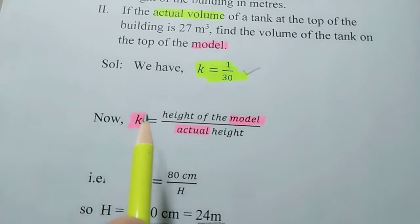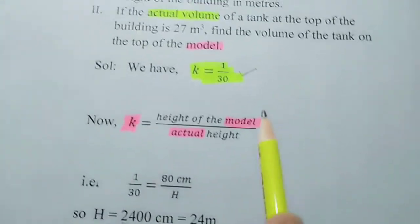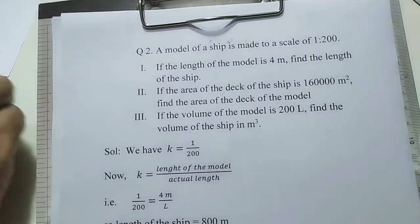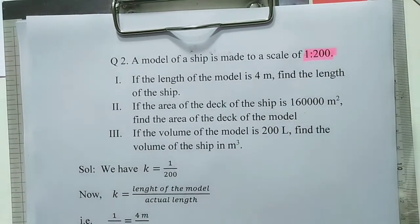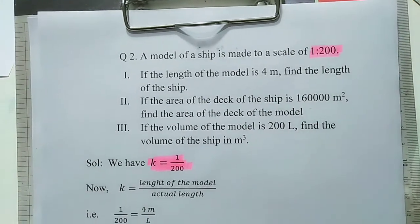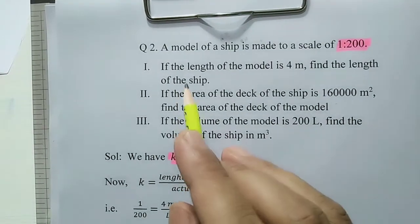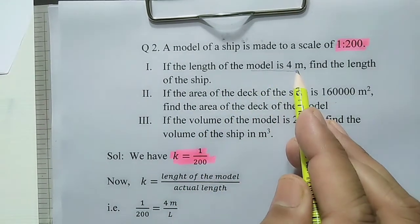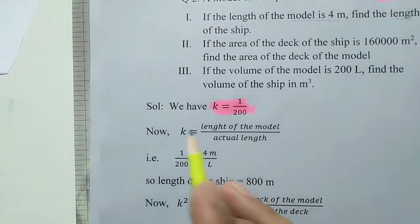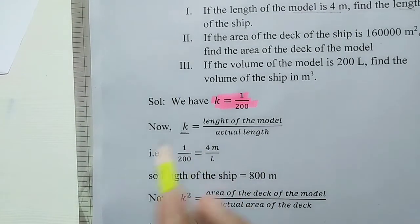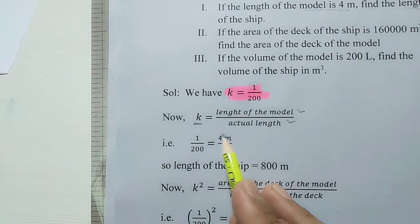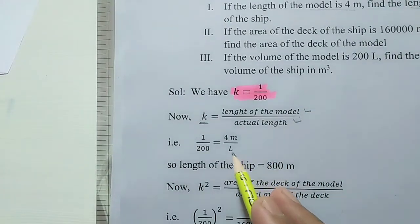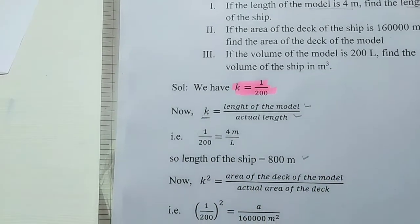If comparing volume, take k cubed; if comparing length, take only k — and always model upon actual. Now Question 2: a model of a ship is made to a scale of 1 ratio 200, so k equals 1 upon 200. In the first part, the length of the model is given as 4 meters — find the actual length. Since we are comparing length, we apply k equals model length upon actual length: 1 upon 200 equals 4 meters upon capital L. Solving, we calculate the actual length L.